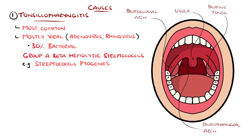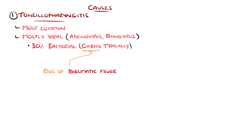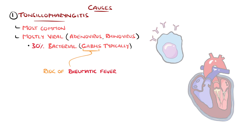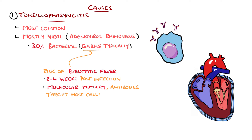Strep throat is more common in those between 5 and 15 years of age, is rare before three years, and is less common in older adults. The reason this distinction is important is because of the possible complications of group A strep pharyngitis, in particular rheumatic fever, that typically develops two to four weeks post-infection due to molecular mimicry, where antibodies directed against the bacteria also cross-react and damage the body.